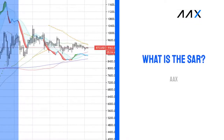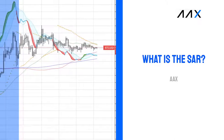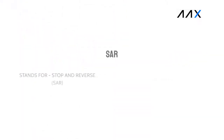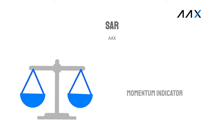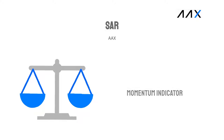In the video today, we're going to be looking at what is the SAR parabolic. SAR stands for stop and reverse parabolic. The SAR parabolic is a momentum indicator, otherwise known as a lagging indicator.